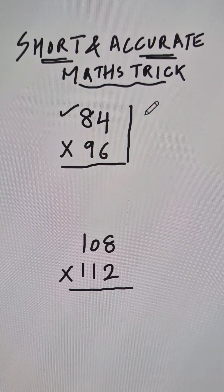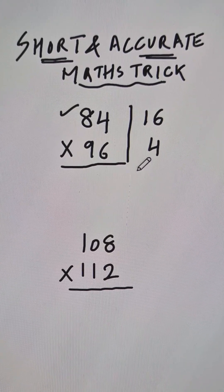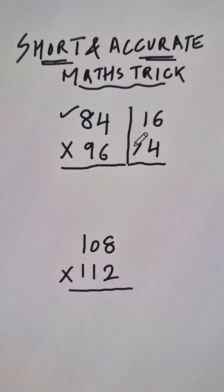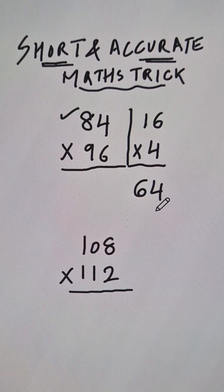84 is 16 less than 100 and 96 is 4 less than 100. So when you multiply 16 and 4 you get 64, and these are the last two digits of your answer.